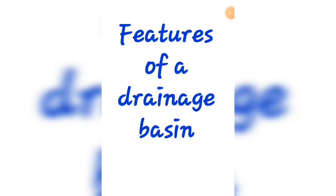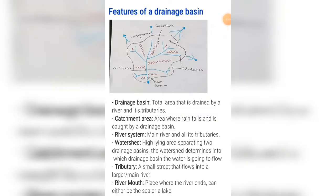Today we'll be discussing features of a drainage basin as well as surface runoff and groundwater. In this picture, the black outline as well as everything inside it is known as a drainage basin. A drainage basin is the total area that is drained by a river and its tributaries. The catchment area is where the rain falls and is caught by the drainage basin.